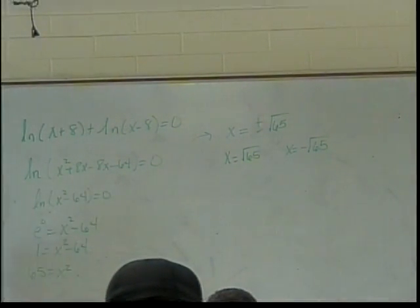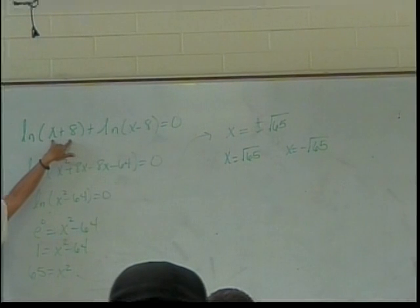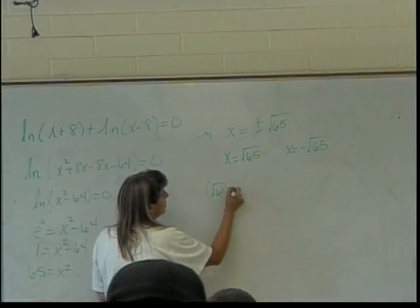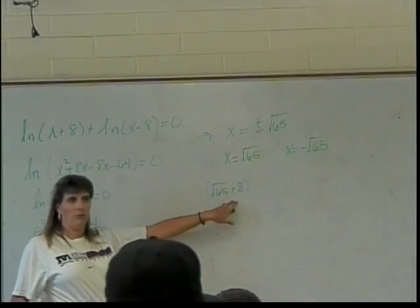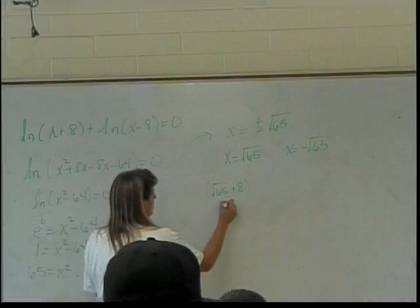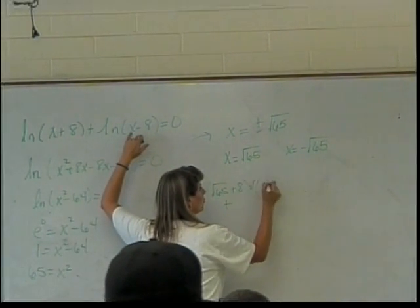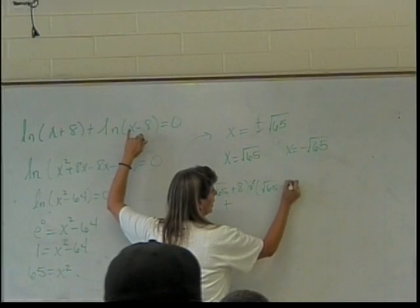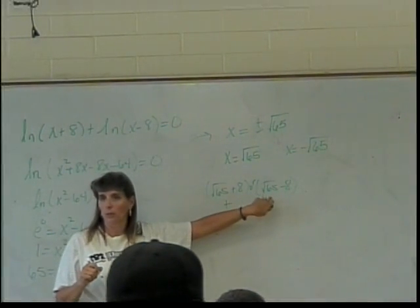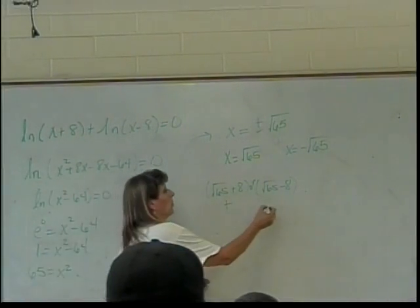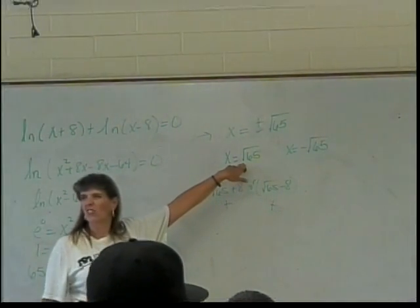Okay, when I take something that's a little bigger than eight and plug it in here, am I going to have something positive? So if I'm taking the square root of 65 plus eight, is that going to be something positive? Yes, that's positive. Okay, what about the square root of 65 minus eight? Is this going to be positive? Think about something a little bigger than eight, minus eight, so I'm still going to have something a little bigger. So that's positive. That means that one is good.